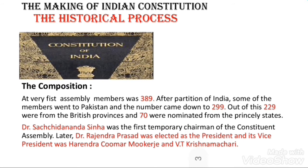Now I will discuss the composition. The very first assembly had 389 members. After the partition of India, some of the members went to Pakistan and the number came down to 299. Out of 299, some were from the British provinces and 70 were nominated from the princely states.